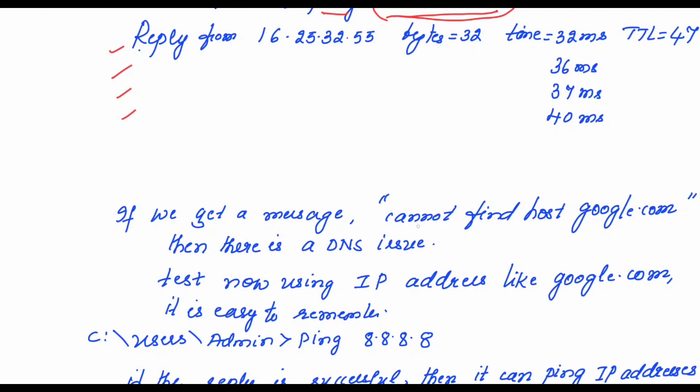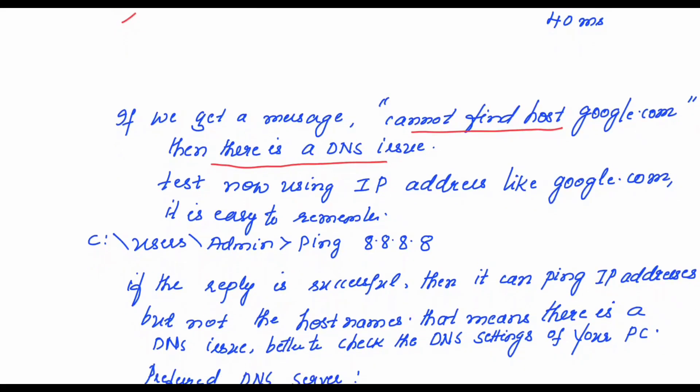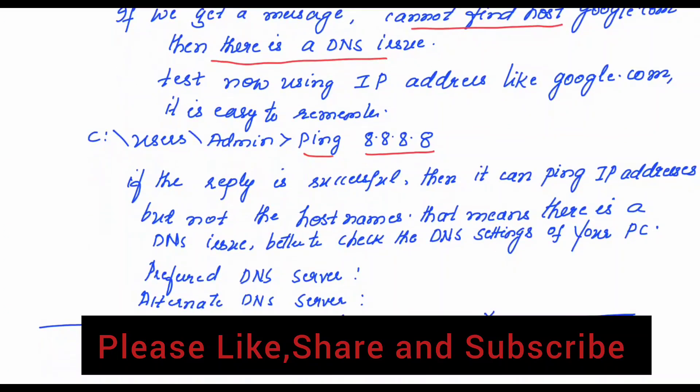Suppose in case if we get a message cannot find host amazon.com or google.com, then there is a DNS issue. That means it is not going to find out the mapping of the host name or the domain name with the IP address. Whether there is a DNS issue or not, further that can also be tested. Just type now instead of the domain name, type the IP address of the server itself. Suppose let us assume 8.8.8.8 is the IP address for the Google server. Then you type ping followed by the IP address of the Google server. If the reply is successful, then it can ping IP address but not the host names. That means there is a DNS issue. Better to check the DNS settings of your PC.